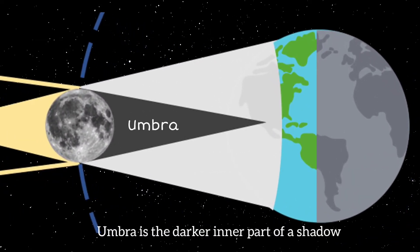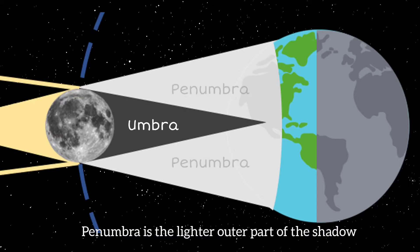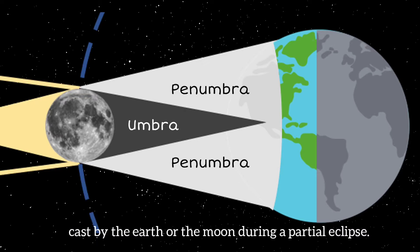Umbra is the darker inner part of a shadow cast by the Earth or moon experiencing the total phase of an eclipse. Penumbra is the lighter outer part of the shadow cast by the Earth or the moon during a partial eclipse.